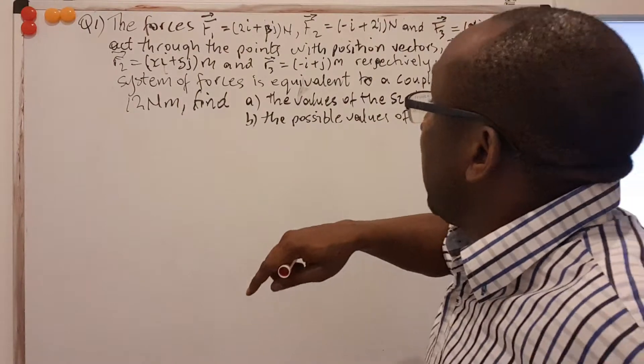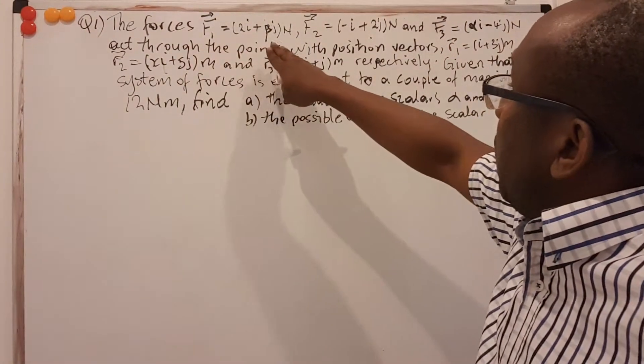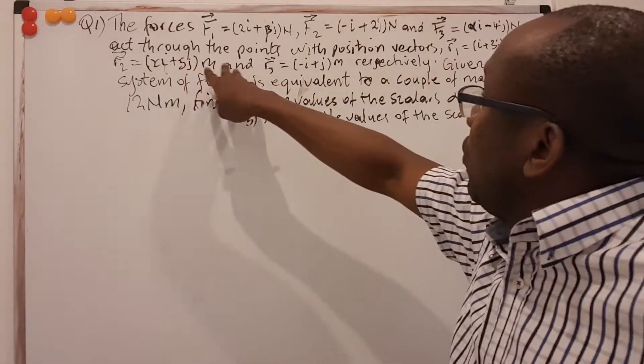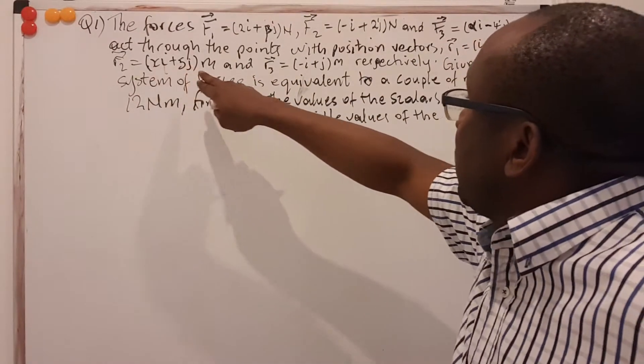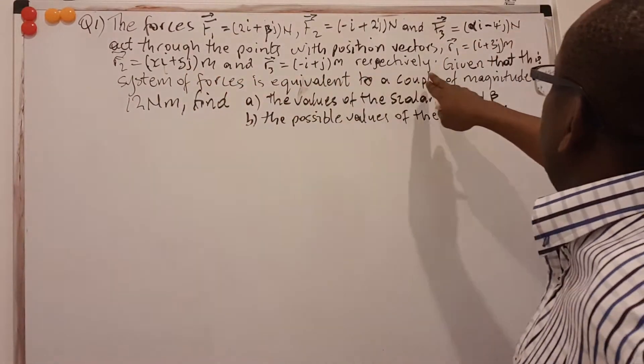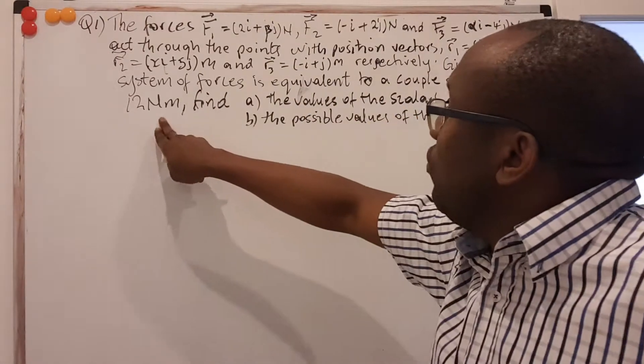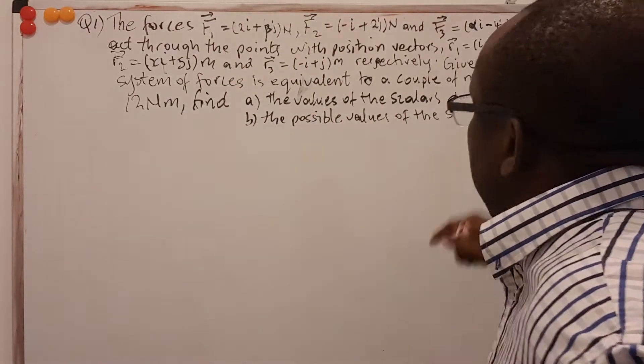So here we will look at it this way. The forces F1 = (2i + β j)N, F2 = (-i + 2j)N, and F3 = (α i - γ j)N act through the points with position vectors r1 = (1+3j), r2 = (xi + 5j), and r3 = (-i + j) respectively. Given that this system of forces is equivalent to a couple of magnitude 12 newton, find the values of scalar alpha and beta and the possible values of the scalar x.